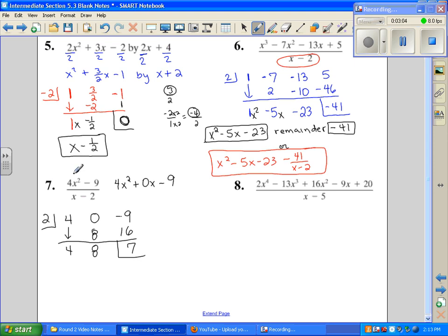Go back and look at your original, which was an x squared, so go one less, x to the first. And this answer is going to be four x plus eight, plus my remainder of seven over x minus two.